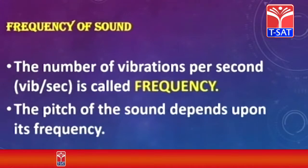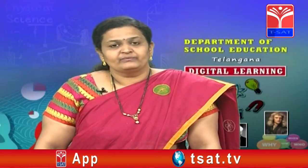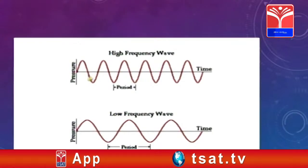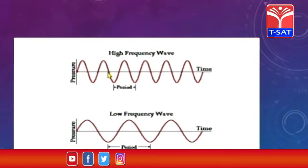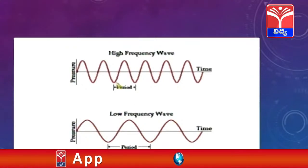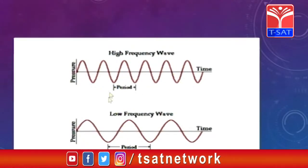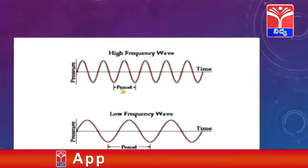The pitch of the sound depends upon its frequency — higher the frequency, higher is the pitch; lesser the frequency, lesser is the pitch. In this diagram, you can understand what a high frequency wave and a low frequency wave is. This horizontal line corresponds to time. In both diagrams, you have the same time duration, but look at the number of waves formed. Here we have 6 waves and here we have only 3 waves. Therefore this is a high frequency wave and this is a low frequency wave — meaning this sound wave has high pitch and this one has low pitch. The distance between the peak of the wave and the baseline is called the amplitude of the wave.